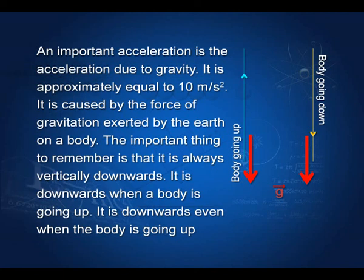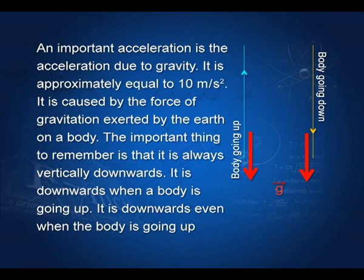An important acceleration is the acceleration due to gravity, approximately equal to 10 meters per second squared near the surface of the earth — the exact value is 9.81 or 9.82 m/s². It is caused by the force of gravitation exerted by the earth on a body. The important thing to remember is that it is always vertically downwards. Even if the body is going up, the acceleration due to gravity is acting downwards. If the body is moving downwards, g is downwards. If the body is moving upwards, even then the acceleration due to gravity is downwards.